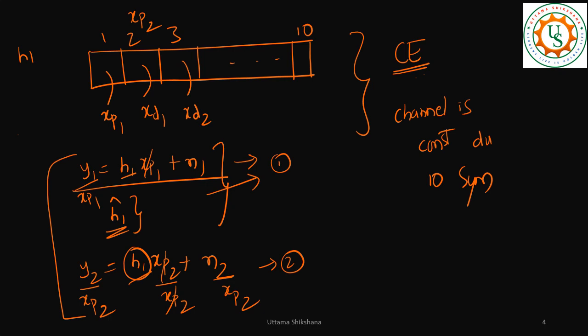Let's say this is the first and this is the second equation. Then if we take average I will add this one. To get h1 hat I would have divided by xp1.